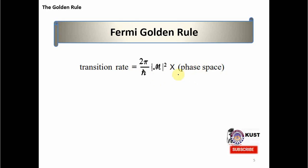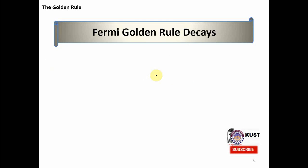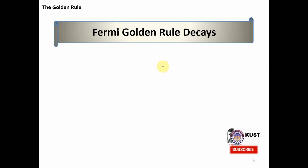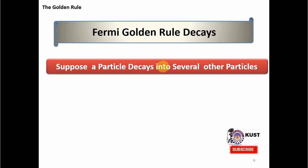That is why the amplitude and phase space come in multiplication. In the Fermi-Golden Rule, we will be calculating both of them — the phase space availability will be enforced by delta functions, and the amplitudes come from the dynamical information. Now we start with the Fermi-Golden Rule specifically for decays.